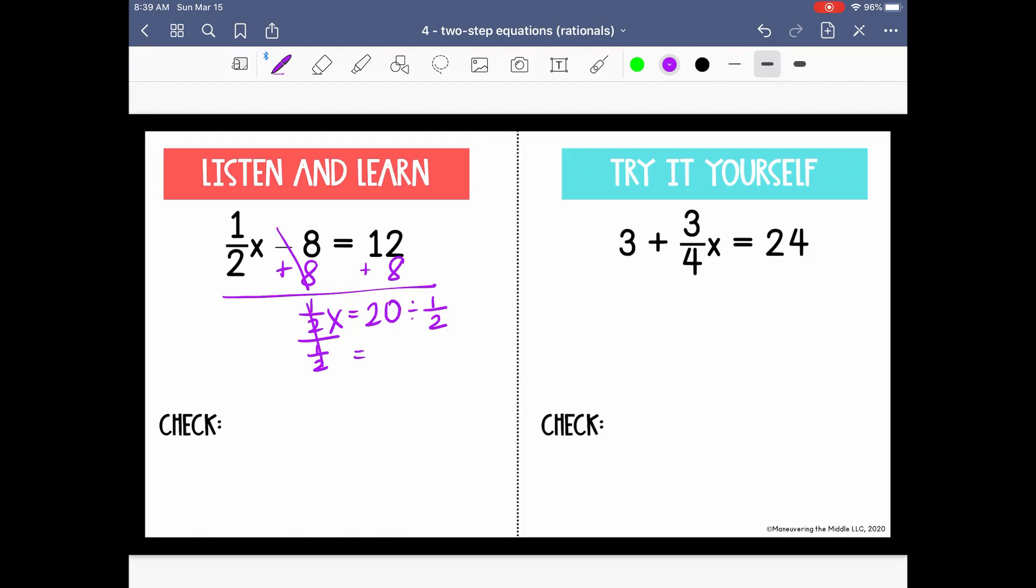So we just said that dividing by a fraction is the same as multiplying by its reciprocal, which is again just a fancy way of saying we're going to switch the numerator and the denominator. So 1 half would become 2 over 1, which is just the whole number 2. So we have x equals 20 times 2, which is 40.